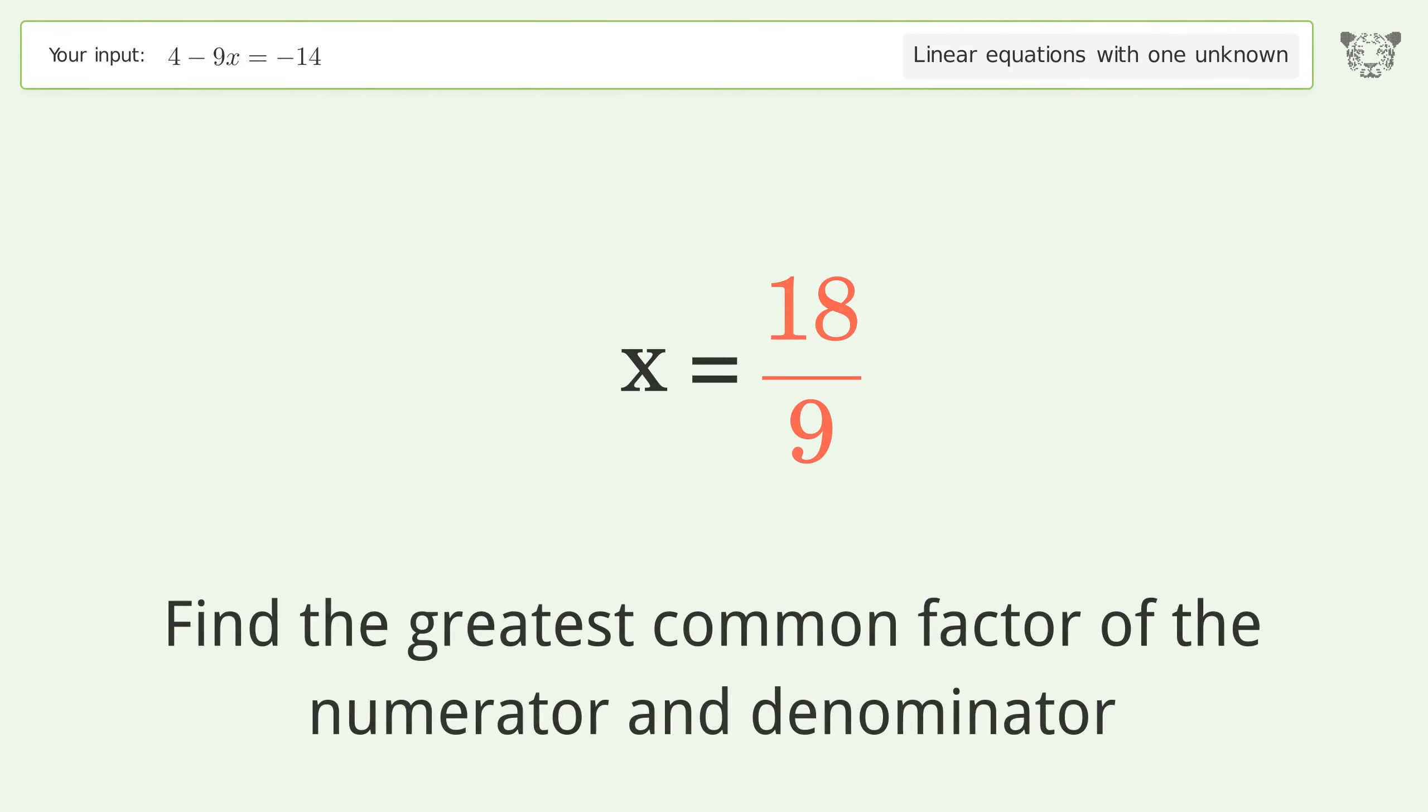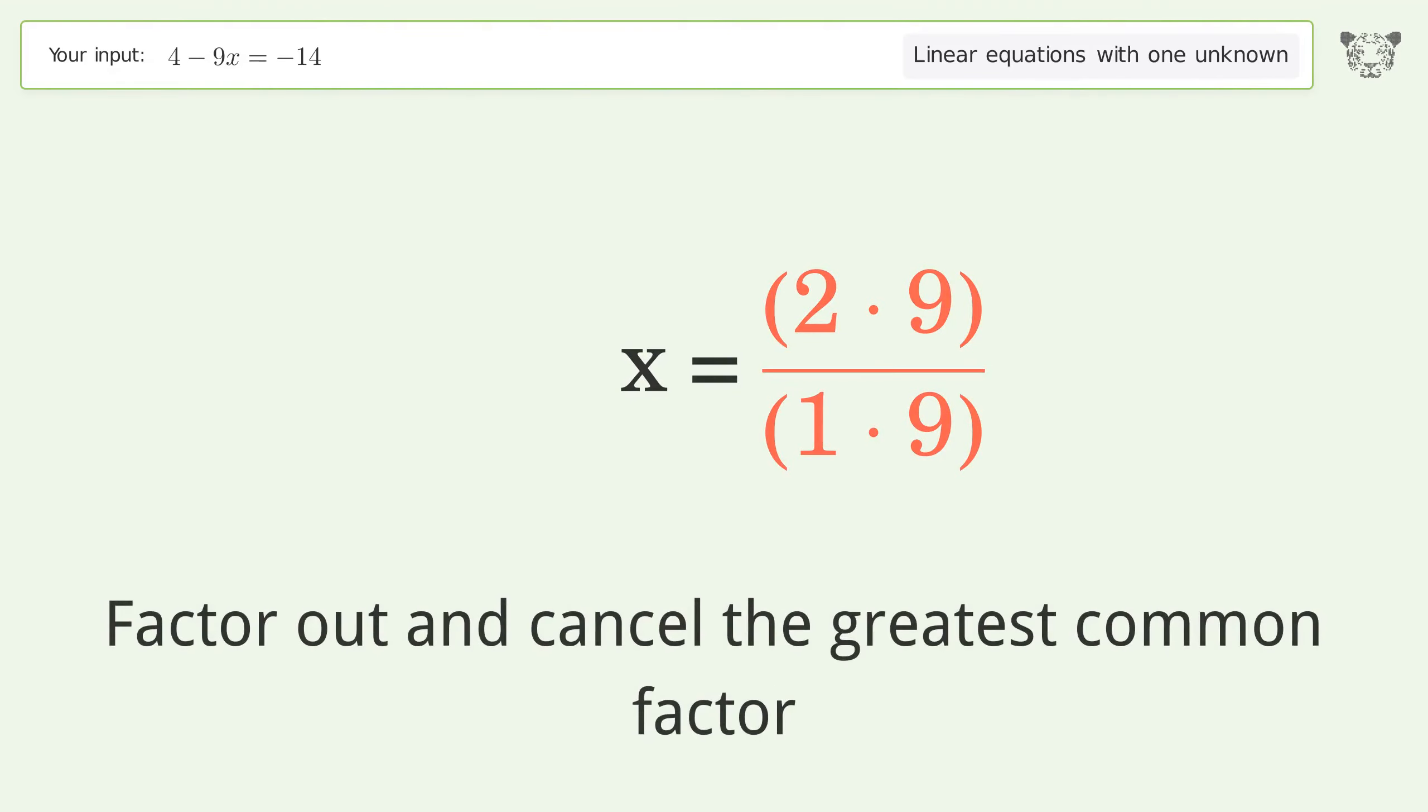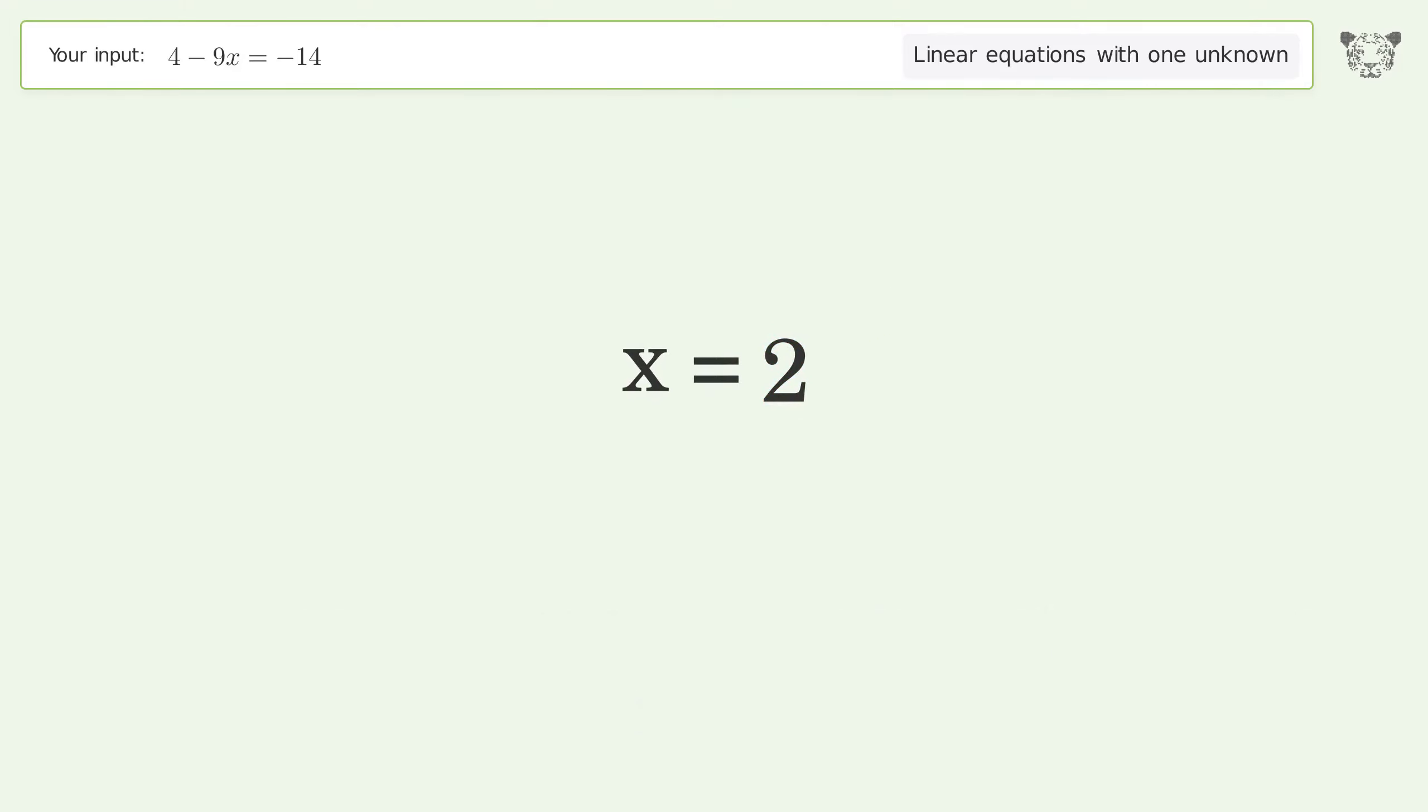Find the greatest common factor of the numerator and denominator. Factor out and cancel the greatest common factor. And so the final result is x equals 2.